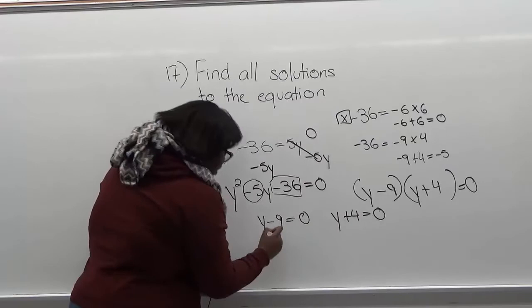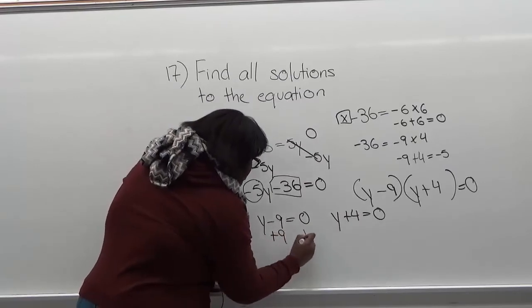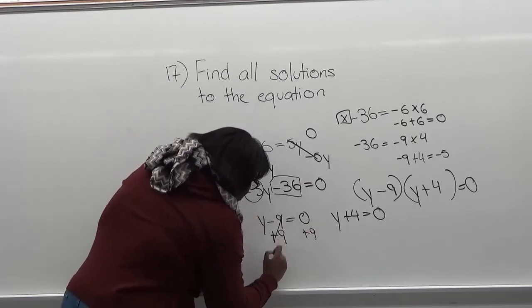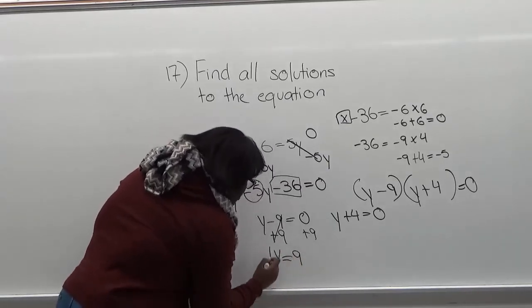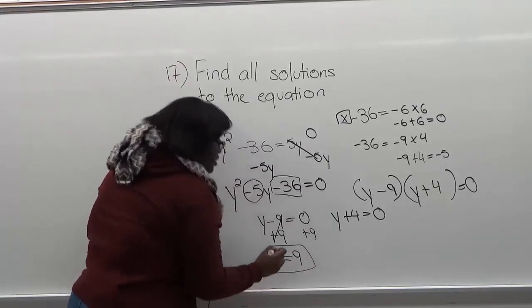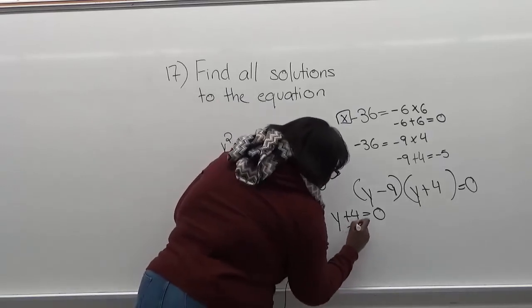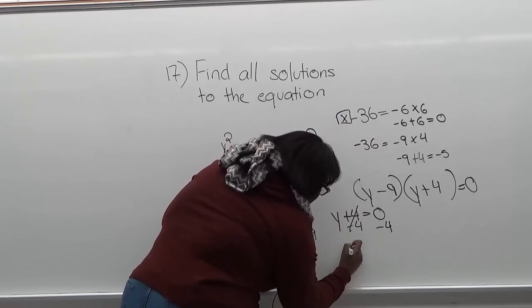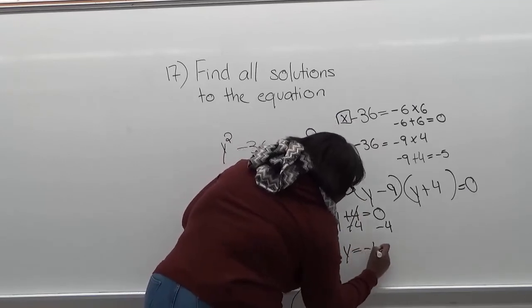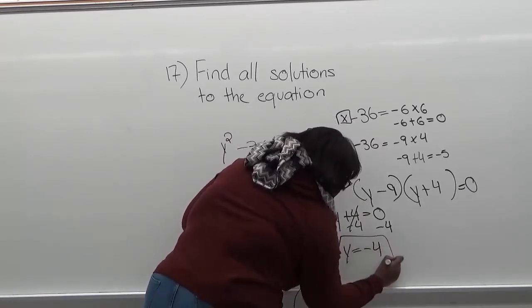You're going to add 9 on both sides. Then you're going to have y equal to 9, which is one solution. Then you're going to minus 4 on both sides with this expression. You're going to have y equals negative 4, which is your other solution.